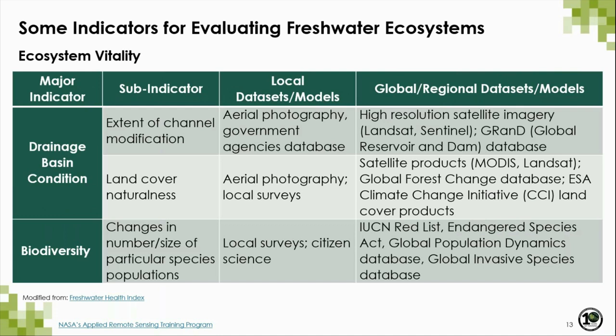Other indicators of ecosystem vitality are drainage basin condition and biodiversity. These can be assessed in terms of extent of channel modification, land cover naturalness, and changes in species populations. Some datasets incorporated in tools such as the Freshwater Health Index include local databases and aerial photography, complemented with high and moderate resolution satellite data, land cover products, and different species datasets.